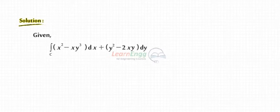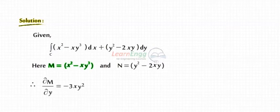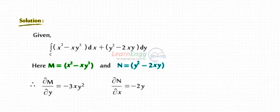Solution. Given the closed integral of (x squared minus xy cubed) dx plus (y squared minus 2xy) dy, here M equals x squared minus xy cubed and N equals y squared minus 2xy. Therefore, ∂M/∂y equals minus 3xy squared and ∂N/∂x equals minus 2y.